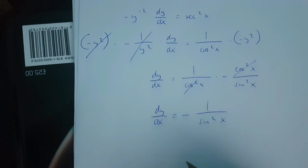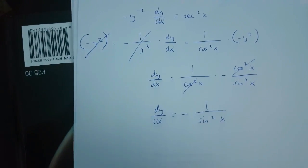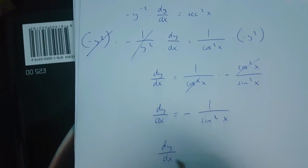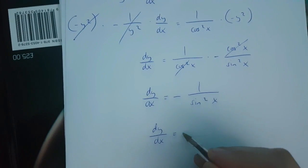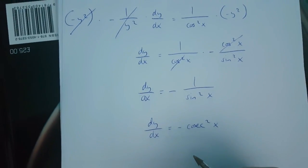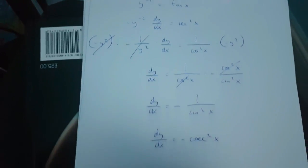But 1 over sin x squared is actually equal to cos x squared. So dy over dx is equal to minus cos x squared. And this is y equals cos x differentiated.